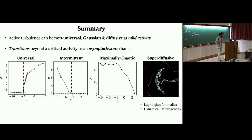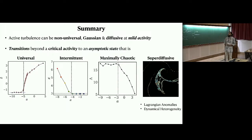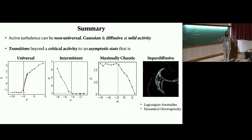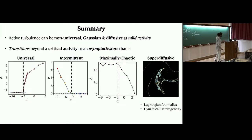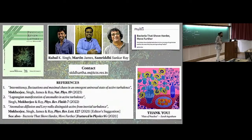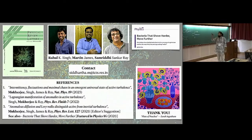To summarize: active turbulence can be non-universal, Gaussian, and diffusive at mild activity. But there clearly is something like a transition to states that are universal, intermittent, maximally chaotic, with multi-scale dynamics in the same way as inertial turbulence — and very interestingly, Lagrangian anomalies that do not exist in inertial turbulence problems. This is what I mean when I say that living turbulence is a matter of states. It was a real pleasure to work on this with Rahul, Martin, and Samridhi here over the last three years.